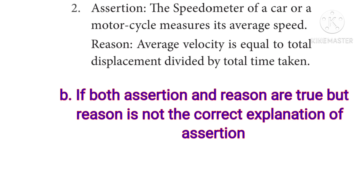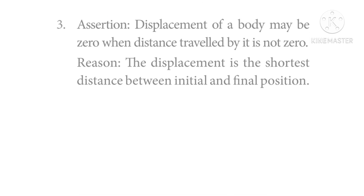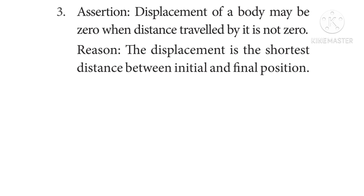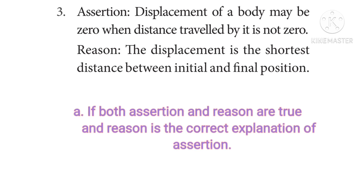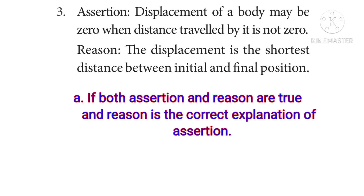Question 3 — Assertion: A displacement of a body may be zero when distance traveled by it is not zero. Reason: The displacement is the shortest distance between initial and final position. The answer is Option A — both assertion and reason are true and reason is the correct explanation of assertion.